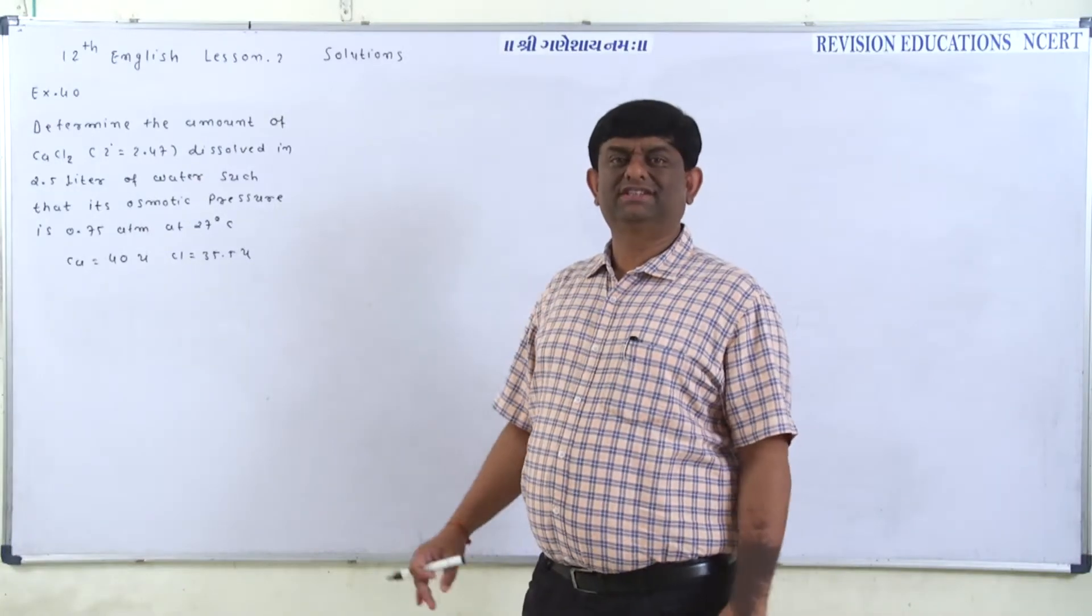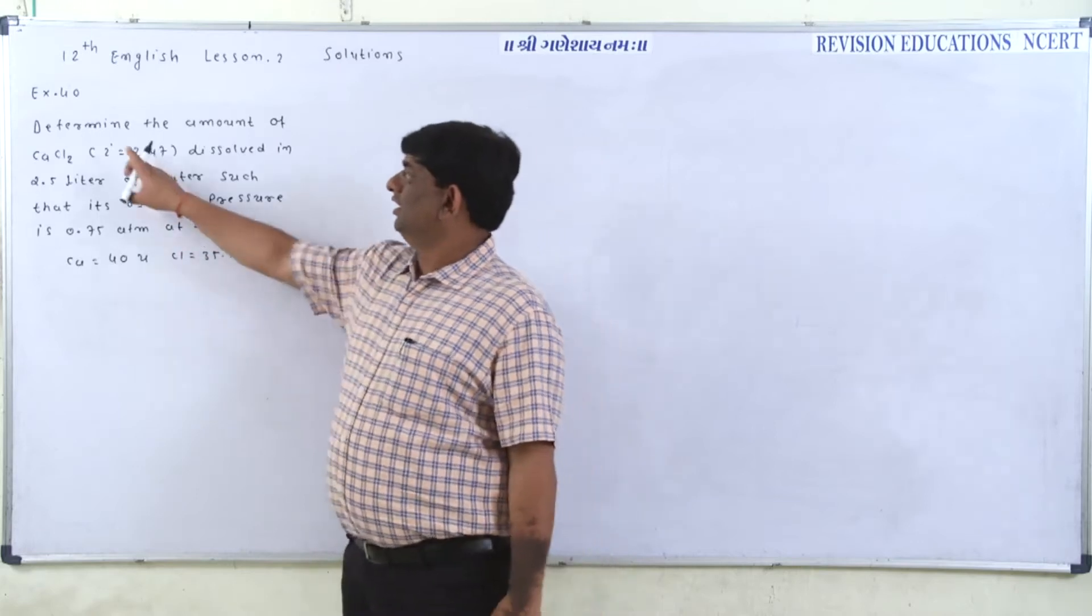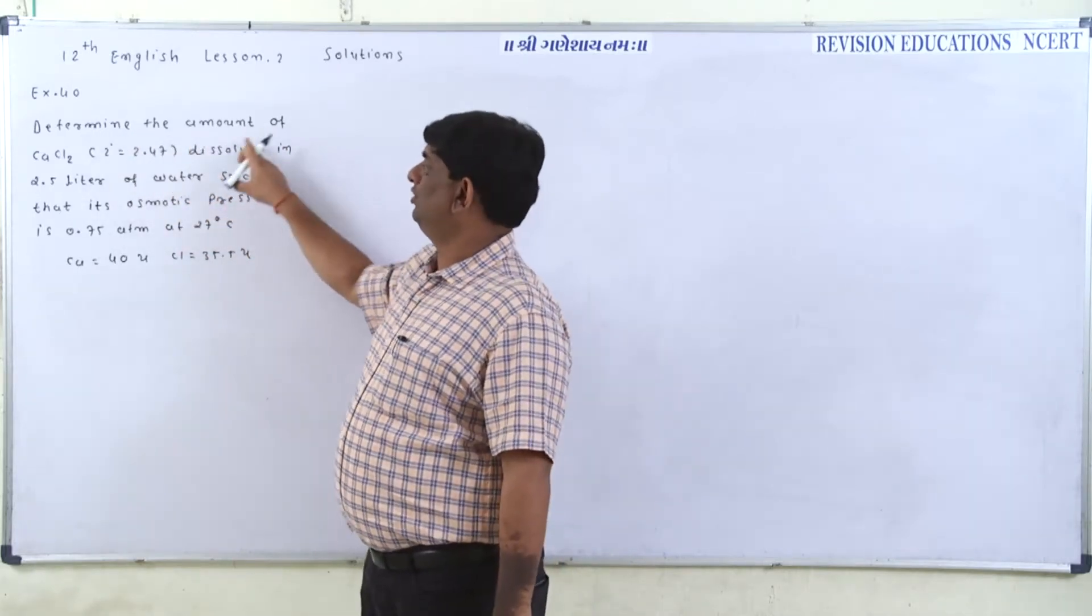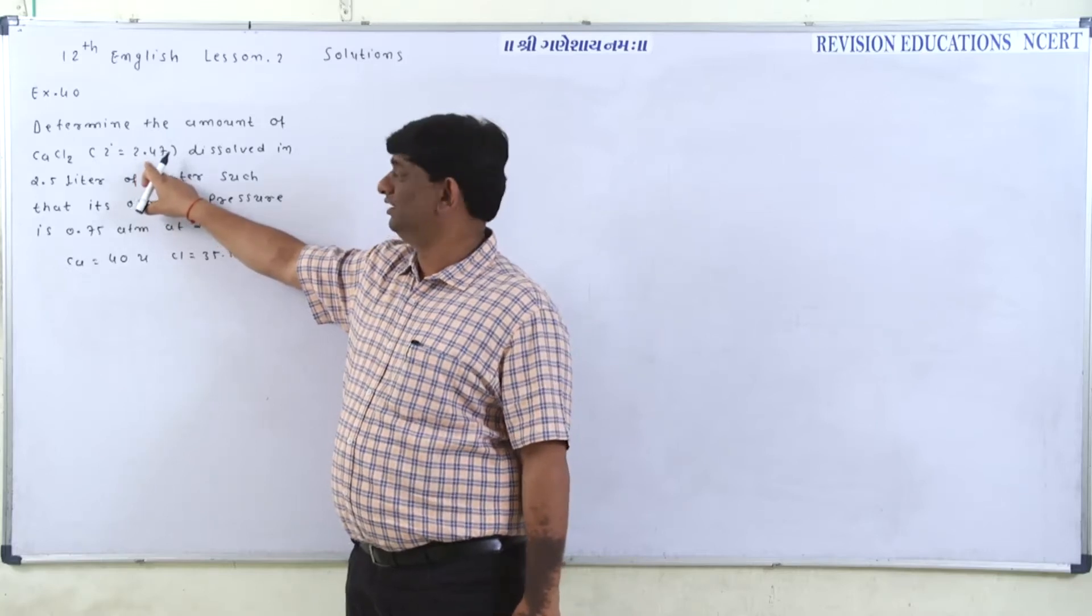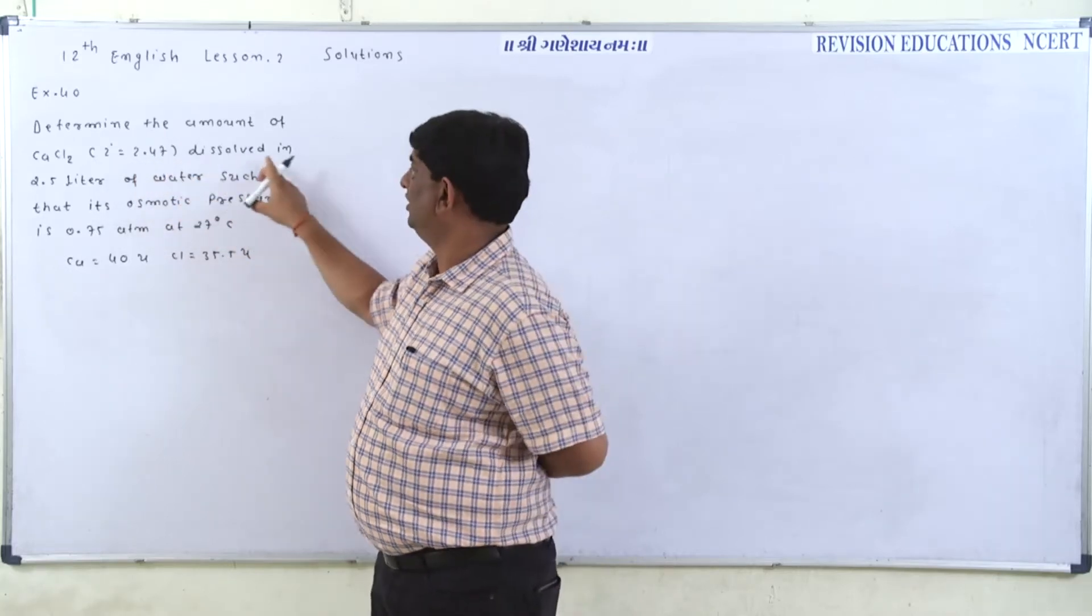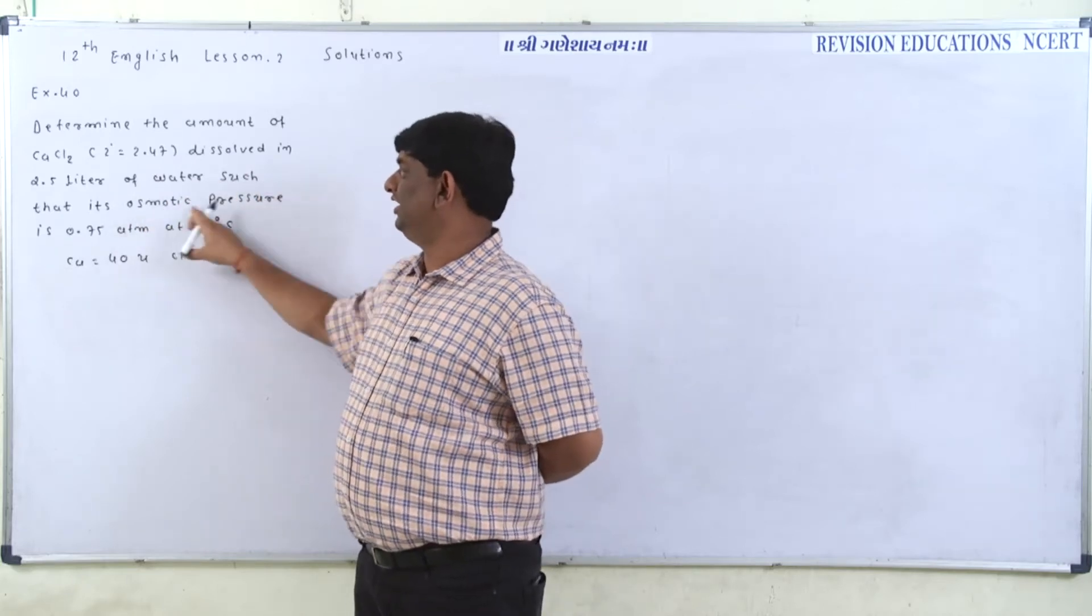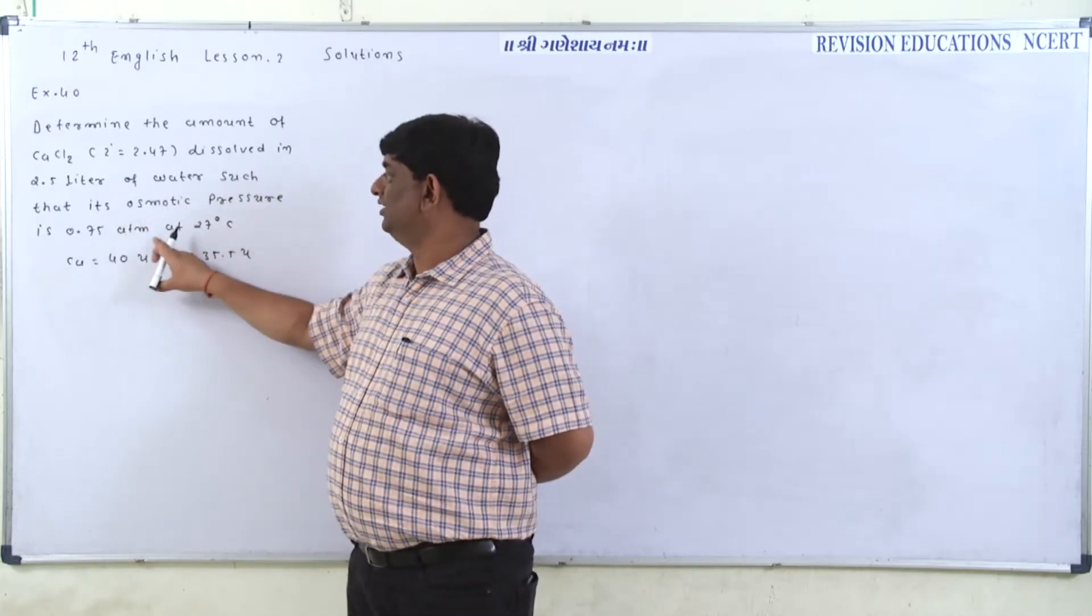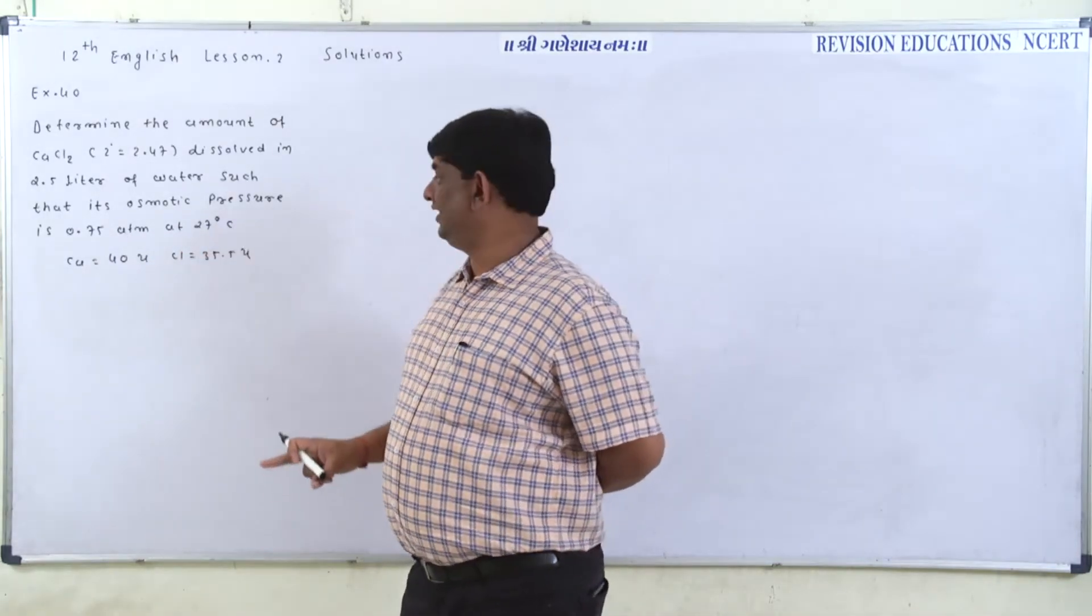Now students, we have discussed exercise number 40 and the question is determine the amount of CaCl2 which has van't Hoff factor 2.47 dissolved in 2.5 liters of water such that its osmotic pressure is 0.75 atmosphere at 27 degrees Celsius temperature.